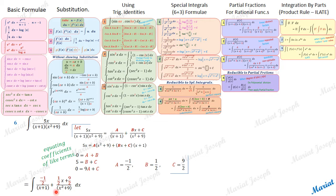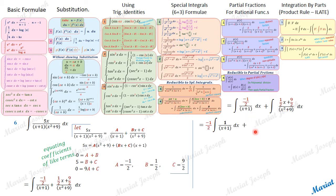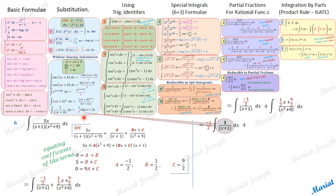These are now two terms, so we can perform the integration as two separate integrals. For the first one, taking −1/2 outside the integral, we are left with 1/(x+1) dx. This comes under the pattern: integral of 1/(ax+b) = (1/a)·ln|ax+b|. Here a=1, so the integral is simply ln|x+1|. The result is −1/2 · ln|x+1|.